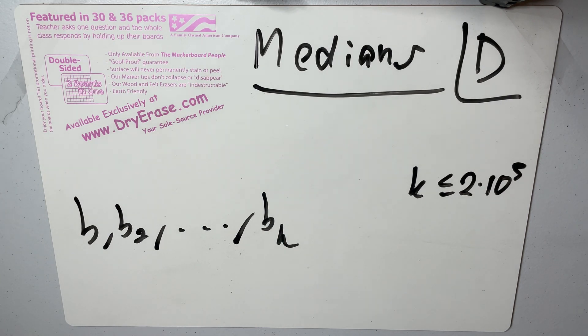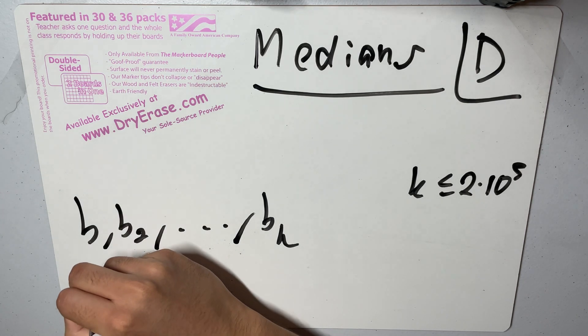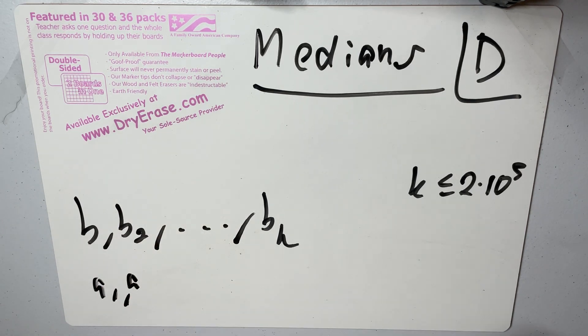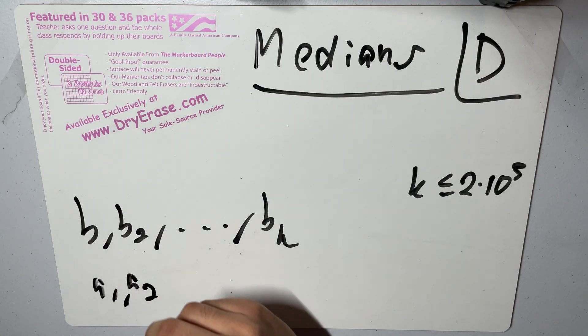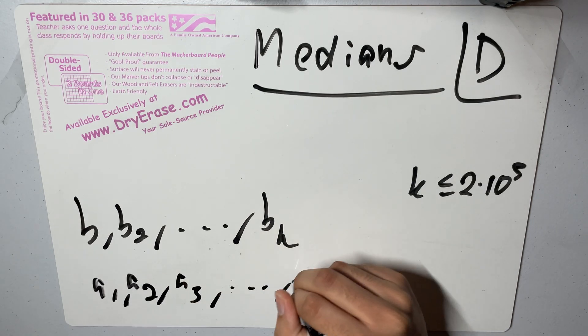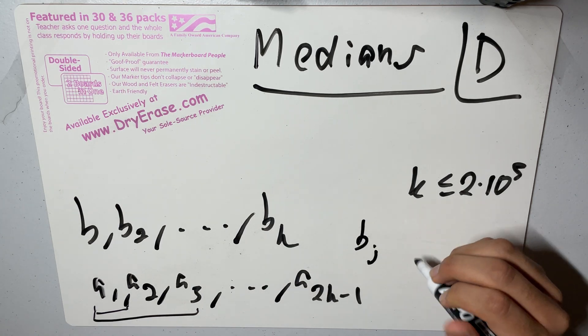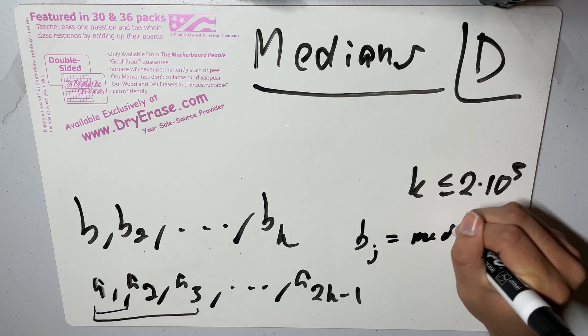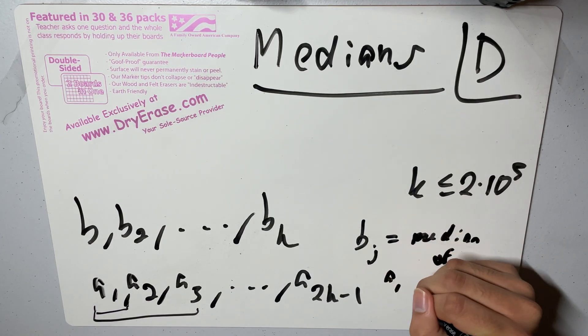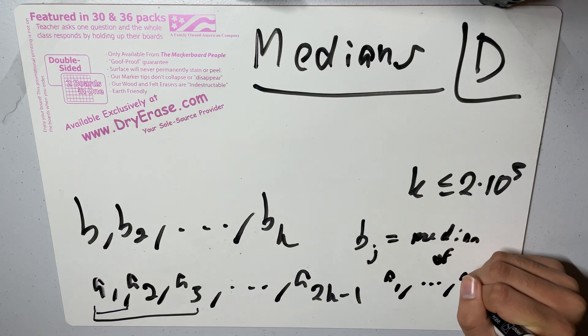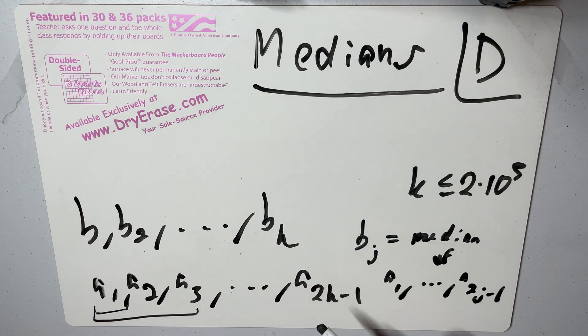It's a yes or no question. You want to say whether there is an array a1, a2, a3, all the way up to a2k minus 1, such that if you consider the first element, these two have to be equal. And then for b2, this has to be the median of these three. In general, you want bj to be the median of a1 through a2 to the j minus 1. So basically, these elements are the medians of the odd length prefixes of this array.